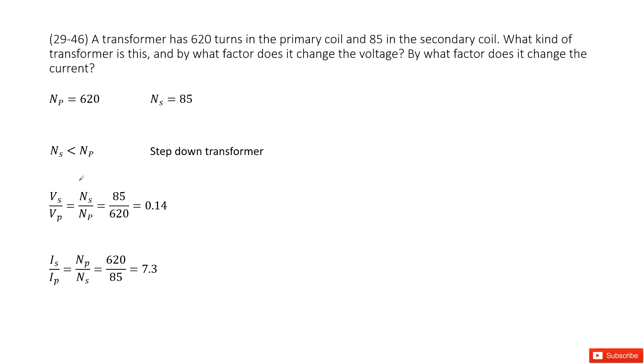This is the equation we learned. The secondary voltage over the primary voltage equals the ratio of the secondary turns over the primary turns. As we know, the secondary turns is smaller than the primary turns, so Vs will be smaller than Vp.